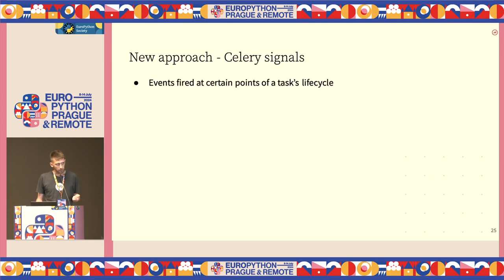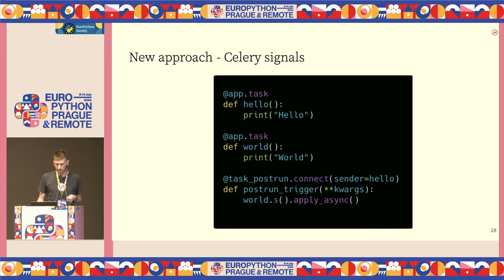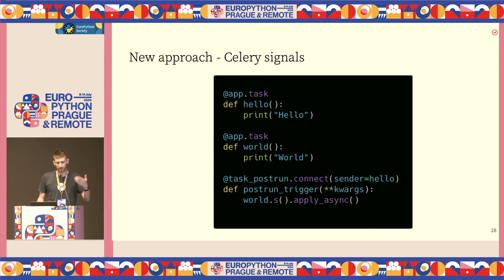We decided to go with a new approach where we utilize Celery signals to hook other pipelines or tasks at different points of a pipeline execution — hooking into specific lifecycle events of a task or a step. Here's an example of a basic signal: when the "hello" task finishes successfully, a post-run trigger is called and it triggers the "world" task. That's basically the foundation for our new approach.